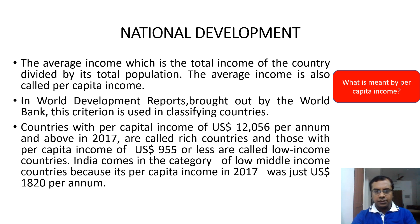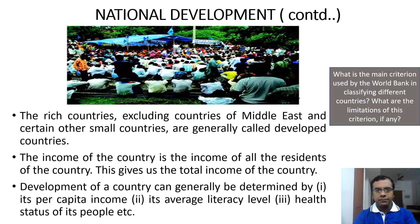The rich countries, including the countries of the Middle East and certain other small countries, are generally called developed countries. The income of the country is the income of all the residents of the country. The development of a country can generally be determined by its per capita income, its average literacy level, and the health status of its people.